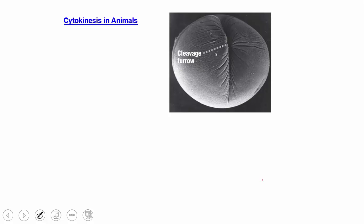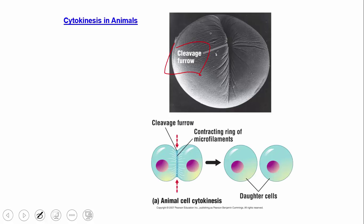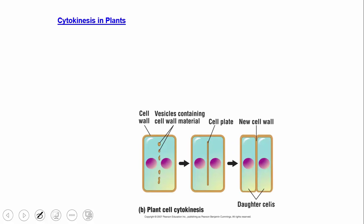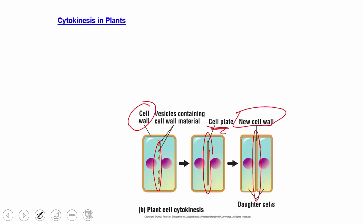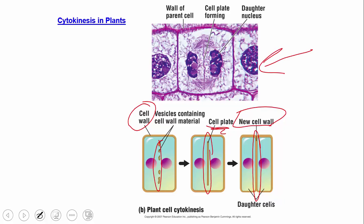A few final notes on cytokinesis: in animals, it involves invagination of the membrane, called a cleavage furrow, where a contractile ring of microfilaments pushes the membrane inward to produce daughter cells. In plants, because they have a rigid cell wall, there's no invagination. Instead, a new cell wall starts forming between the two cells — first called a cell plate while it's forming, then a new cell wall once the two daughter cells are fully independent.